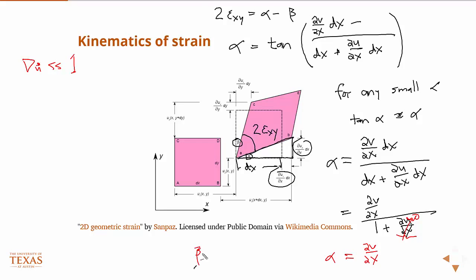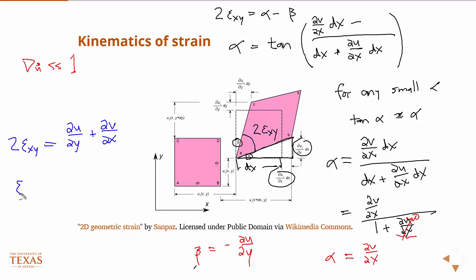Likewise, beta equals minus ∂u/∂y — same geometry. So finally, 2εxy equals ∂u/∂y plus ∂v/∂x, or equivalently εxy equals one-half times (∂u/∂y plus ∂v/∂x). The factor of one-half is still a curiosity at the moment, but it will be clear very shortly.